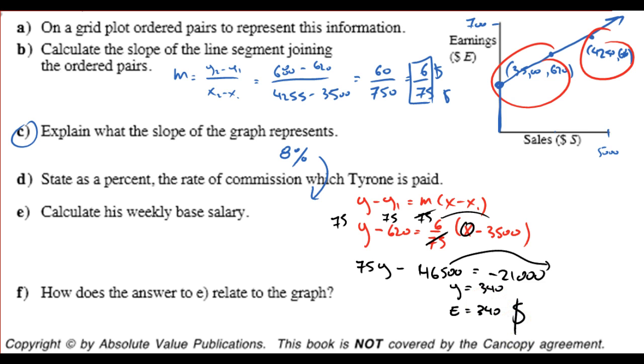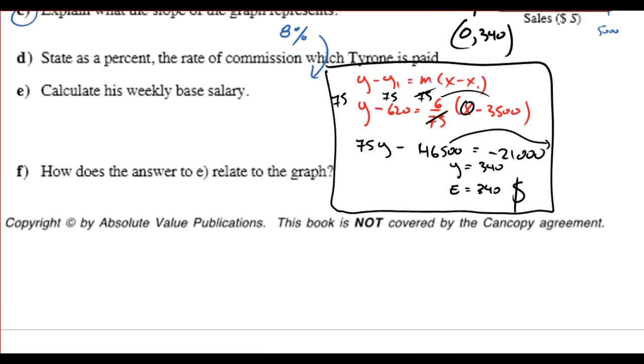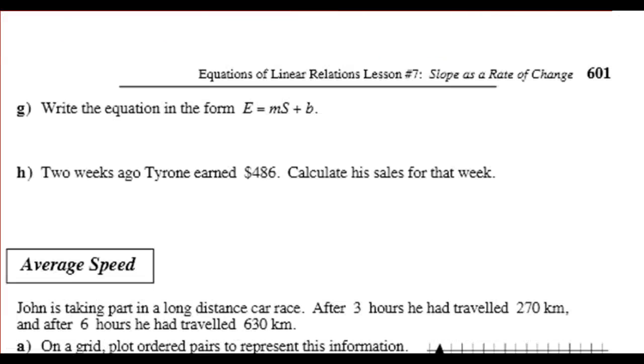How does the answer to E relate to the graph? Well, I already mentioned that that is the Y-intercept right there. That is the coordinate 0, 340. That one took a little bit longer. This is why knowing this equation is useful. Without knowing how to put this into an equation, we wouldn't be able to get the Y-intercept.